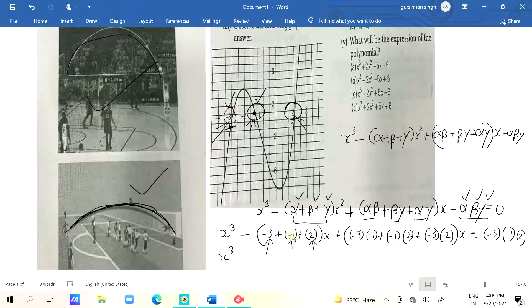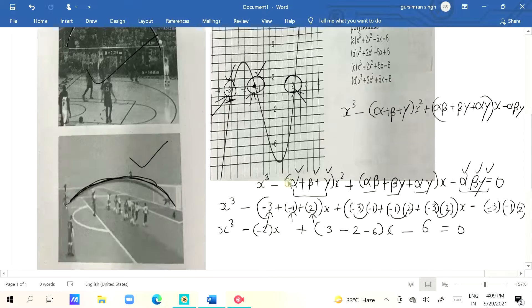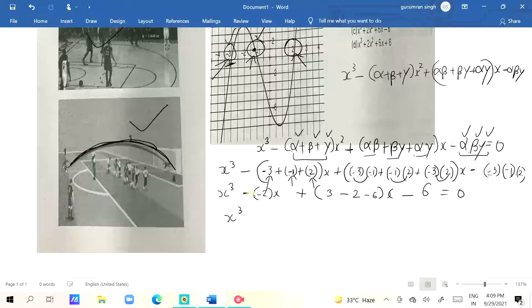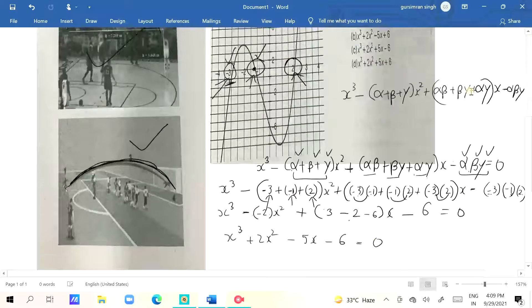So x³ minus (-3 - 1 + 2)x² which is x³ minus (-2)x², then (3 - 2 - 6)x which is -5x, minus 6 = 0. That becomes x³ plus 2x² minus 5x minus 6 = 0.